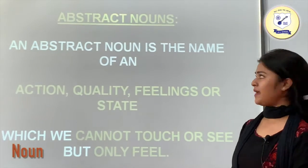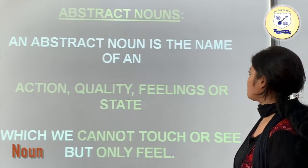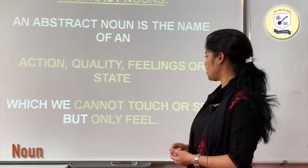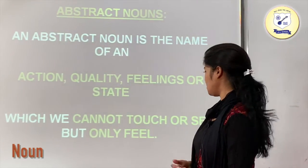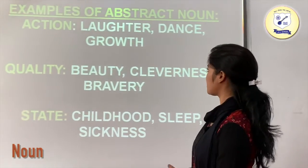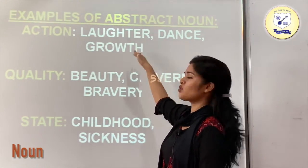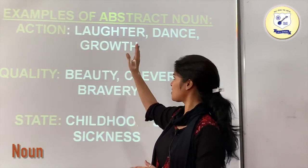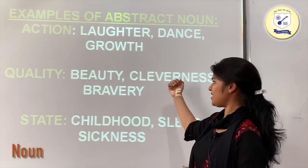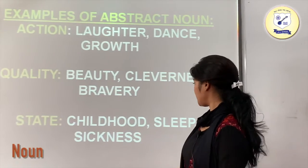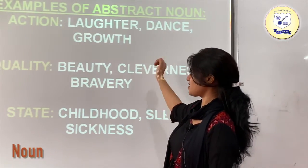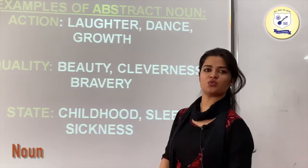Now we have abstract nouns. An abstract noun is the name of an action, quality, feeling or state which we cannot touch or see, but only feel. Examples of actions: laughter, dance, growth. Examples of qualities: beauty, cleverness, bravery. Examples of states: childhood, sleep, sickness. These are the actions, qualities and states that are categorised as abstract nouns.